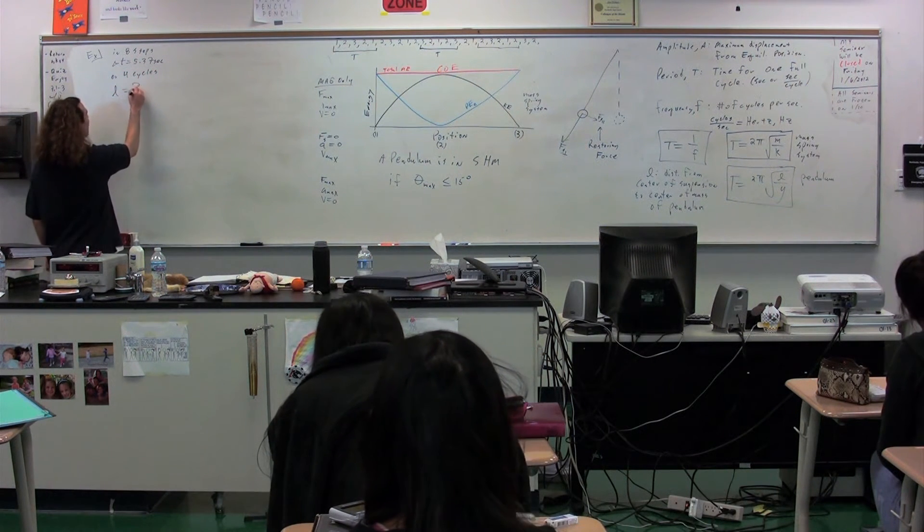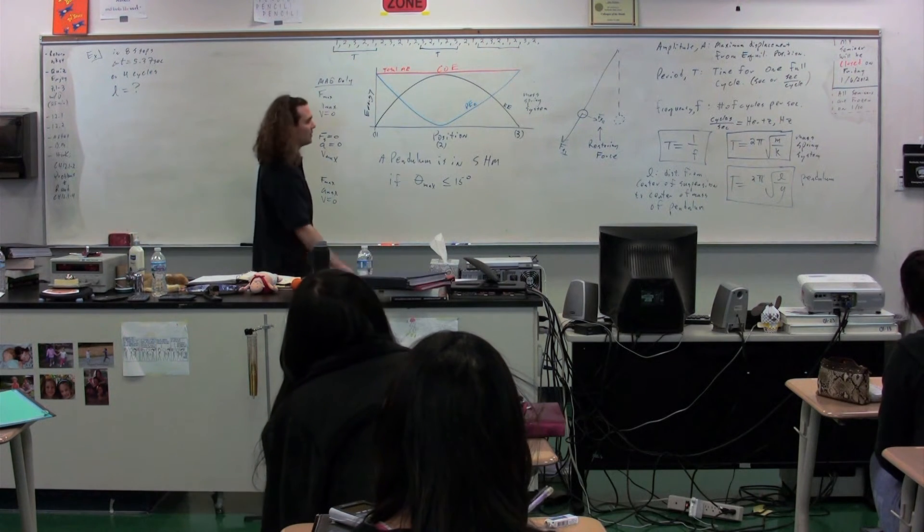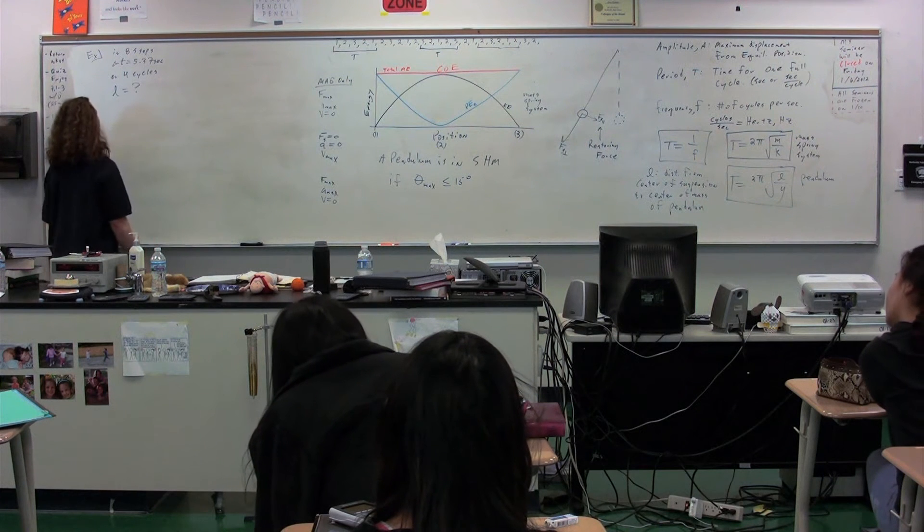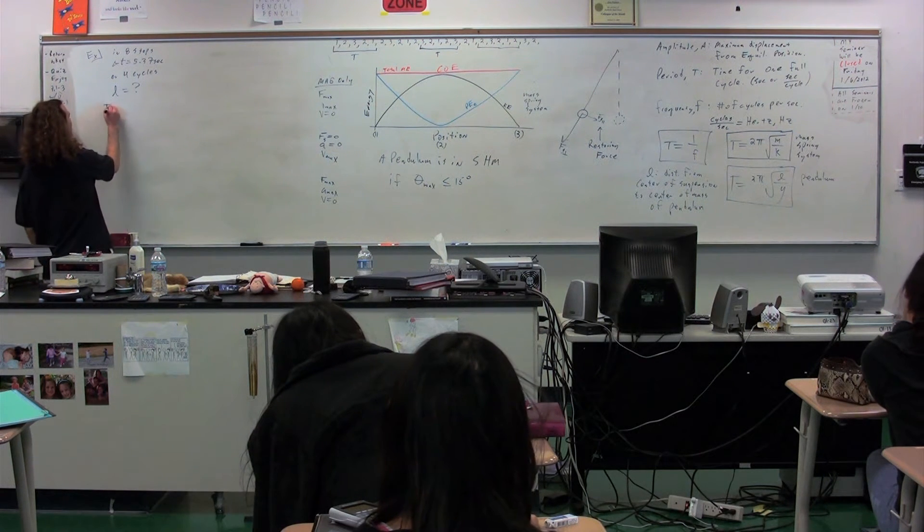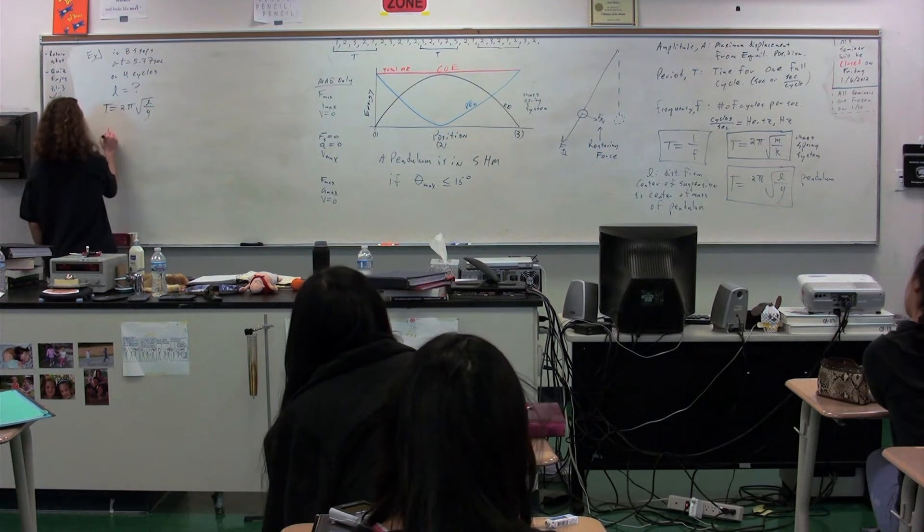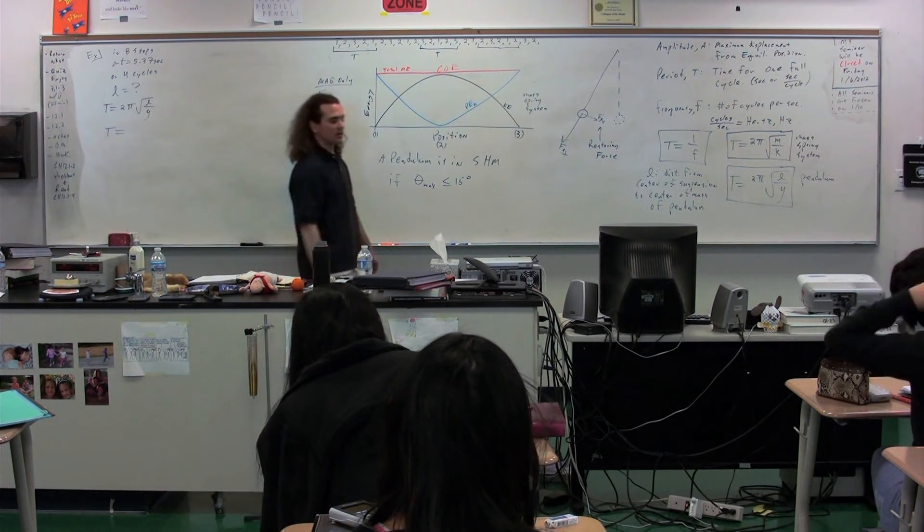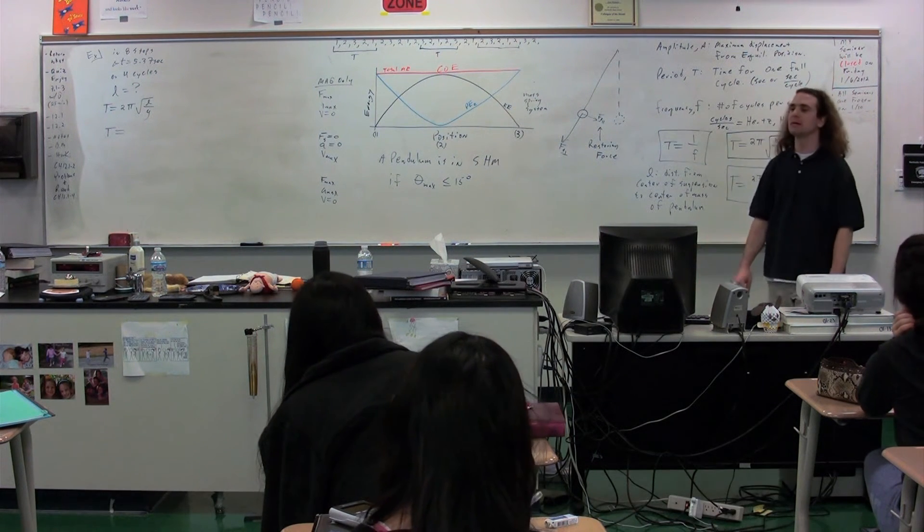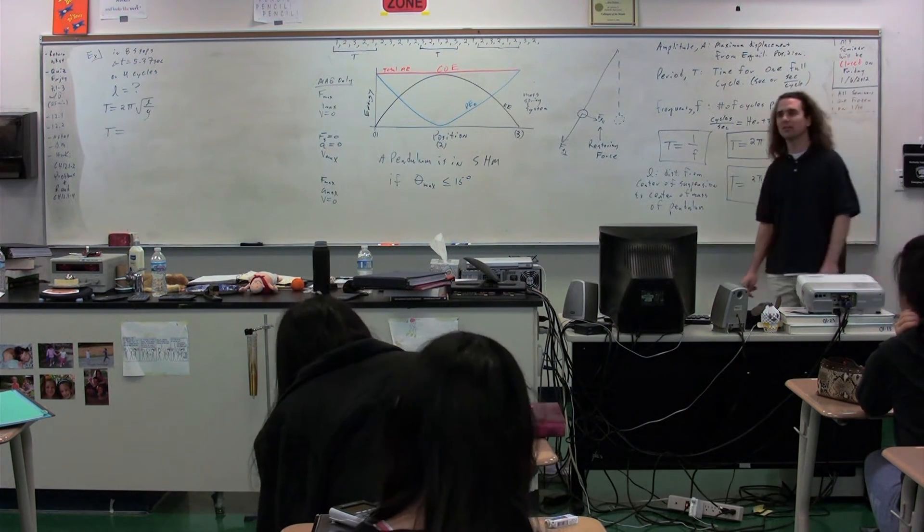And what we're trying to figure out is L, the length of my pendulum or the distance from the center of suspension to the center of mass of my leg. In order to do so, we're going to use the period equals 2 pi times the square root of L over G. So, we need to know the period of my gait. What is the period of my gait? How can we figure this out?